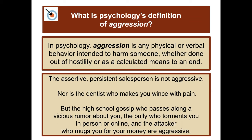In psychology, aggression is any physical or verbal behavior intended to harm someone, whether done out of hostility or as a calculated means to an end. The assertive persistent salesperson is not aggressive, nor is the dentist who wants to make you wince with pain, but the high school gossip who passes along a vicious rumor, the bully who torments you in person or online, and the attacker who mugs you for your money are aggressive.